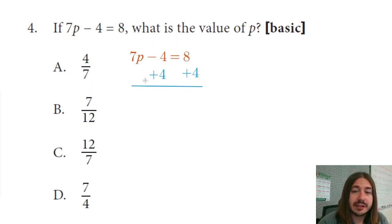And our addition property of equality says that if we add something to one side, we have to do it to the other. So after adding 4 to both sides, we get 7p equals 12. Is that right? Yeah, 8 plus 4 is 12. Good.